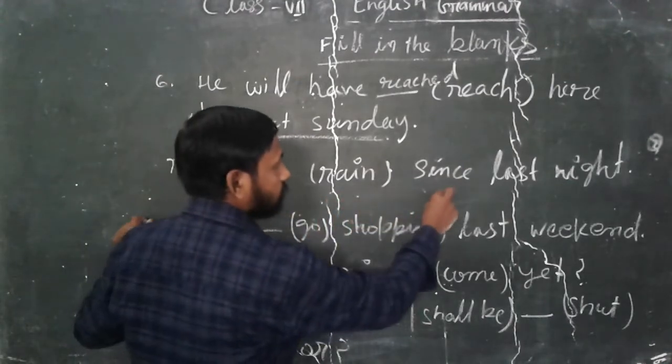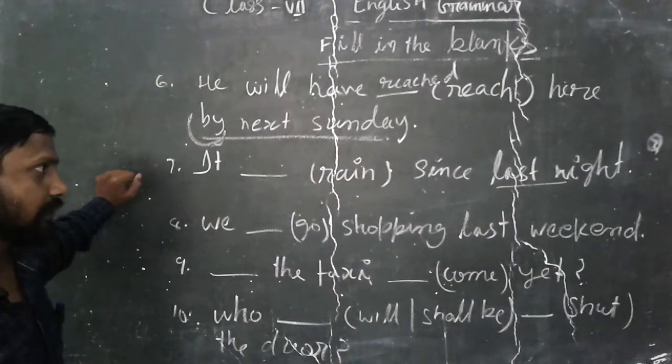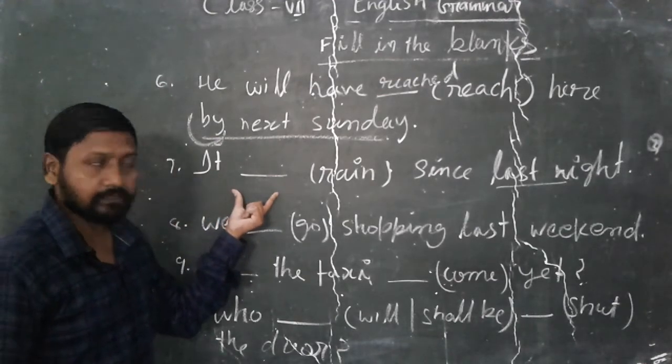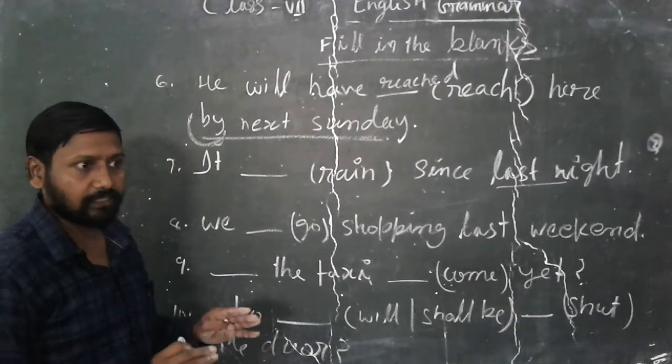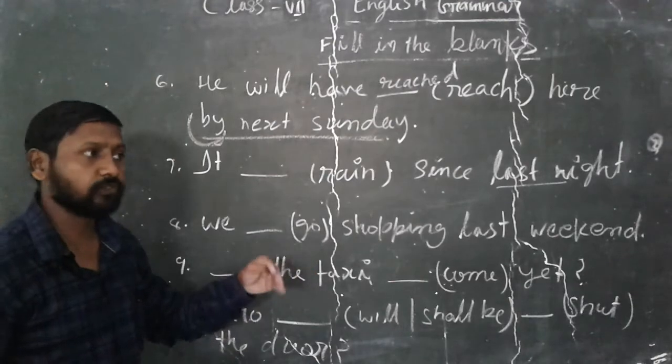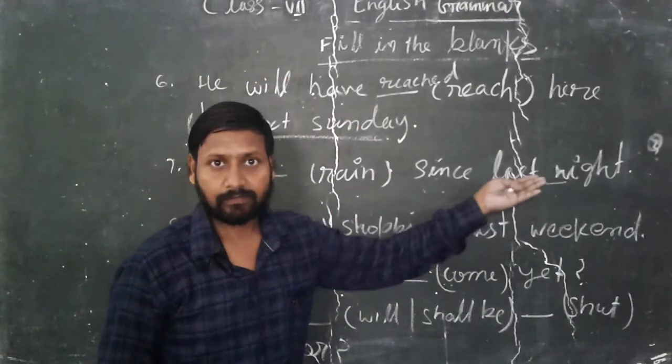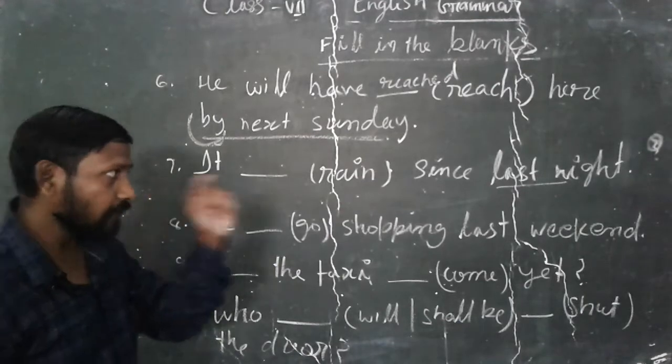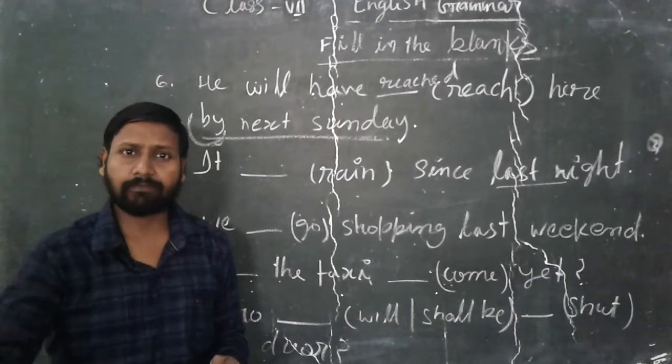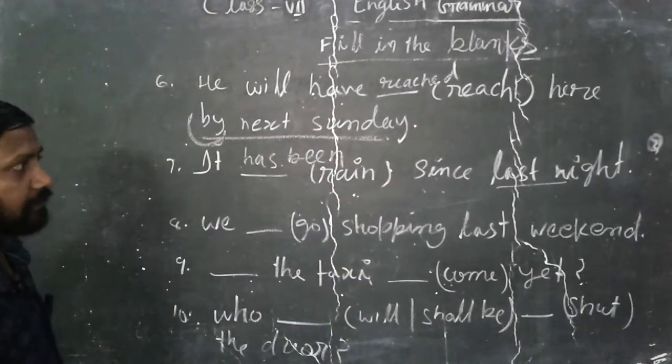It rain since last night. So you will think, sir, last night means the time is in the past. But here is a very thinking thing. That is the last night the rain has started. Means the rain has started and it is going on continuously till now. So means it means this is a joint time. It is not so far. So here we will use it has been raining since last night.